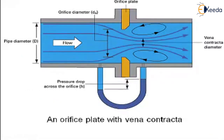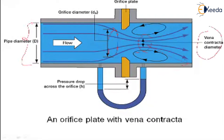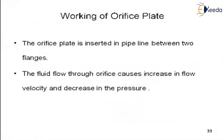Now let me show the cross-section of what is happening inside the orifice plate. This is the pipe diameter, and this is the orifice diameter. At the vena contracta position, the diameter is at its minimum. At that position across the orifice, the pressure drop is maximum — the velocity is maximum and the pressure is minimum, which is the vena contracta condition.